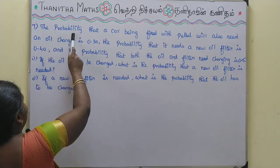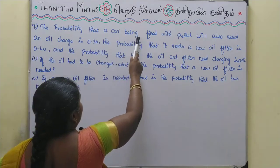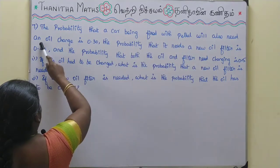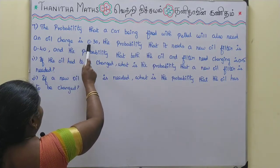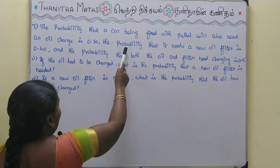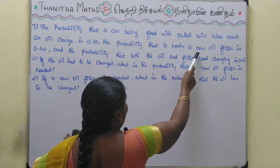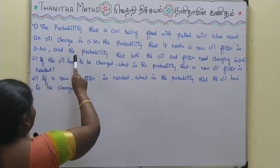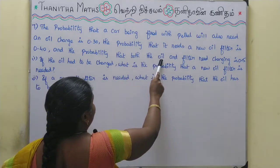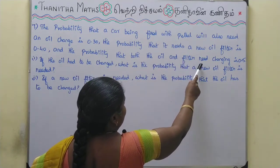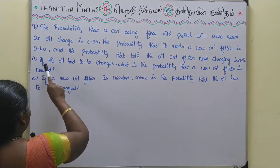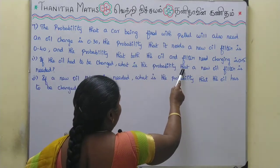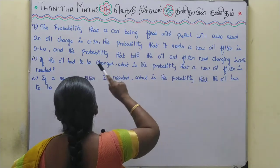The probability that a car being filled with petrol will also need an oil change is 0.30. The probability that it needs a new oil filter is 0.40, and the probability that both the oil and filter need changing is 0.15. If the oil had to be changed, what is the probability that a new oil filter is needed?